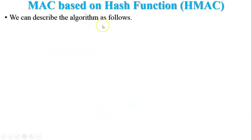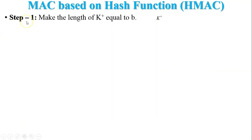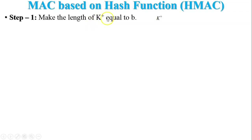The algorithm has mainly seven steps. Step 1: make the length of K+ equal to b. Here K is the secret key. The length of K may not be equal to b, or it may be equal to or greater than b. Here b means the block size — the original message is divided into small fixed-size blocks of size b, and we need K+ to equal b.